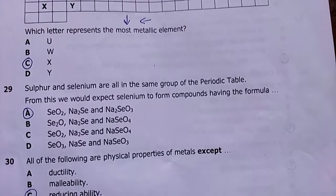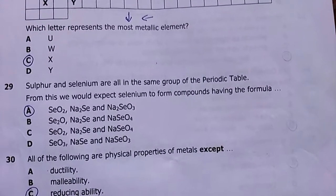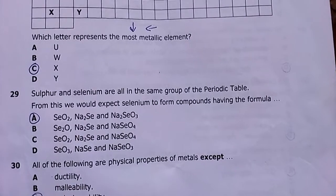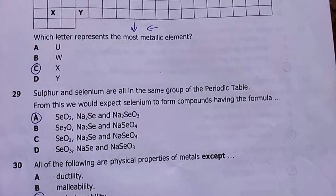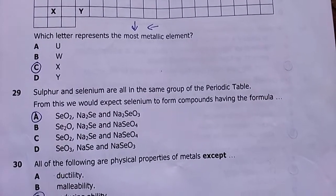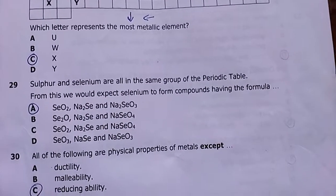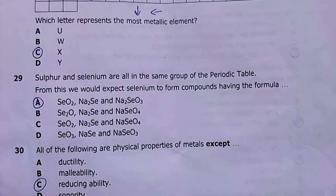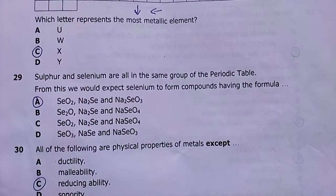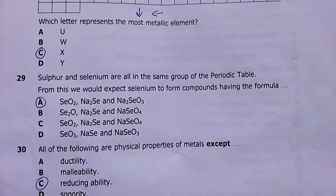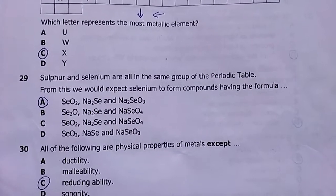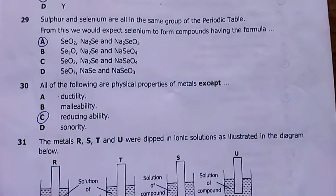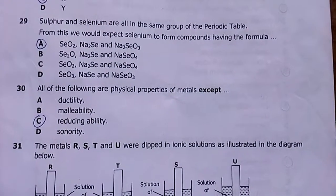Number twenty-nine: sulfur and selenium are in the same group of the periodic table. We would expect selenium to have compounds with the same formulas as sulfur compounds. Imagine selenium to be sulfur. My answer is A.